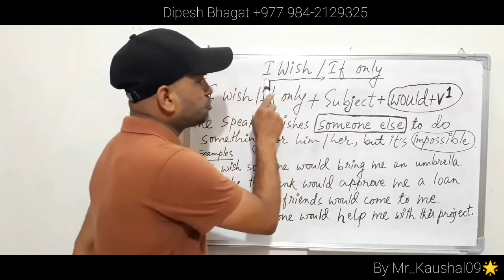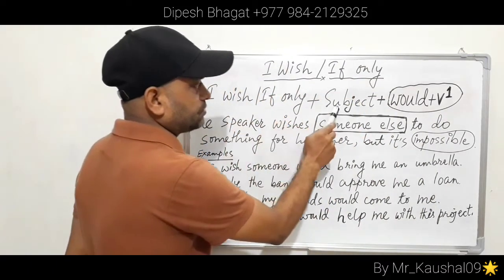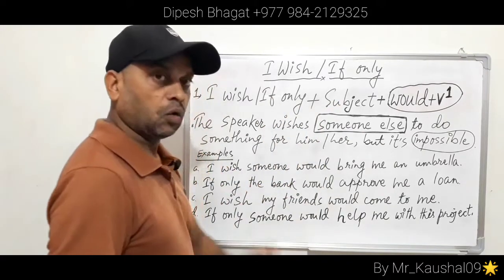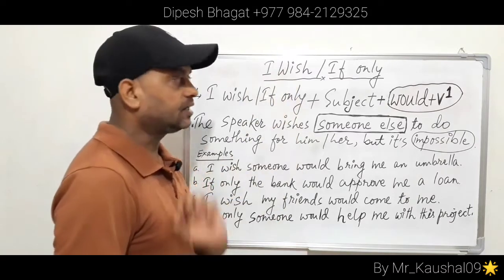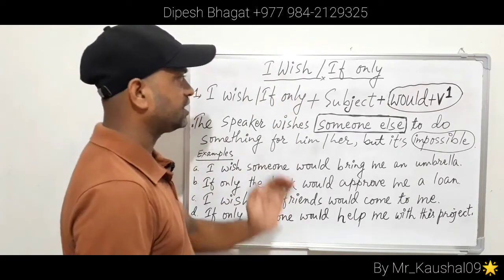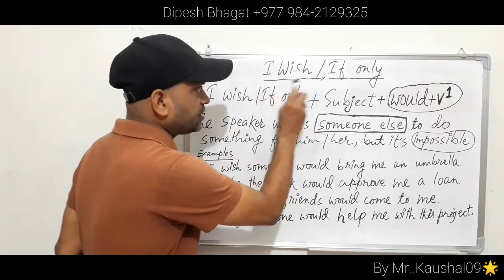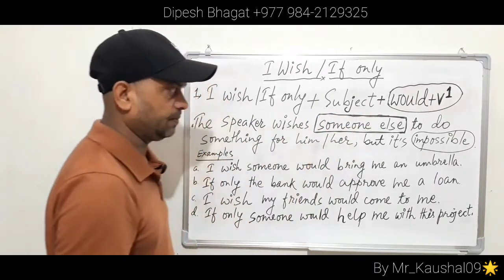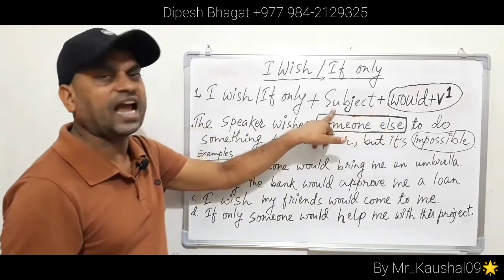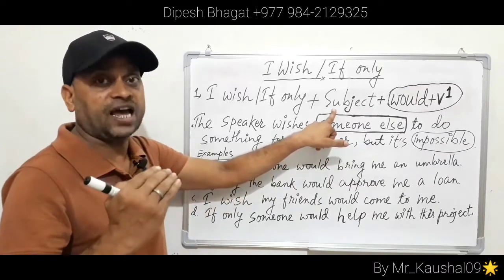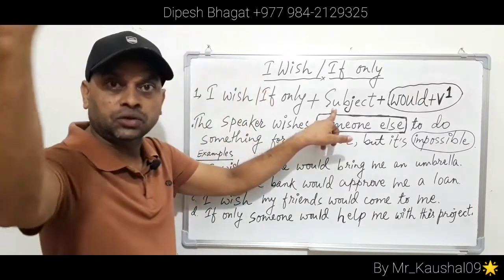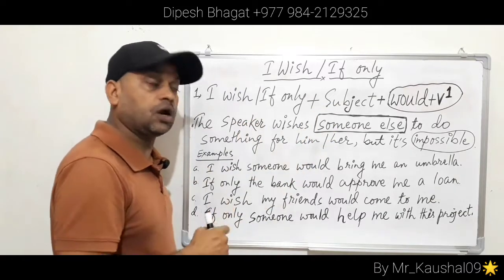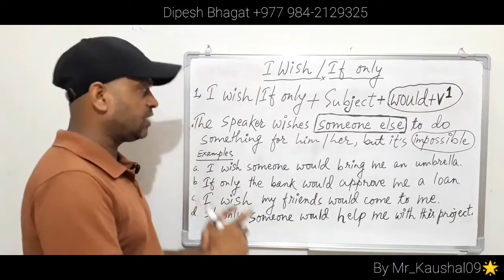The first structure is: 'I wish / if only + subject + would + verb'. There is no difference between 'I wish' and 'if only' — the meaning is the same, they can be used synonymously. The subject here can be anyone except 'I' — a third person or second person. This structure uses 'would + verb'.